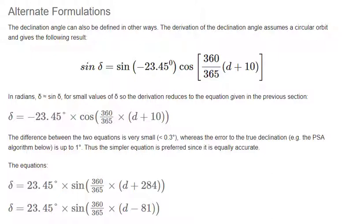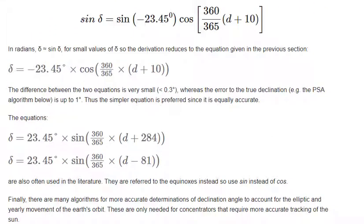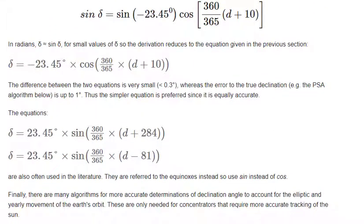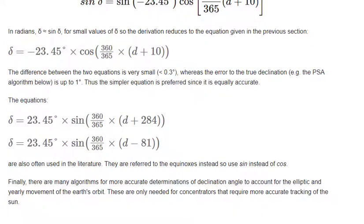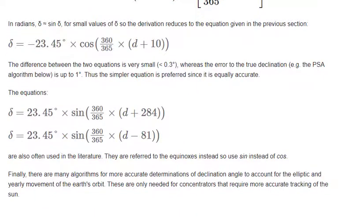Alternate formulations: The declination angle can also be defined in other ways. The derivation of the declination angle assumes a circular orbit and gives the following result. In radians, δ ≈ sin(δ) for small values of δ, so the derivation reduces to the equation given in the previous section.